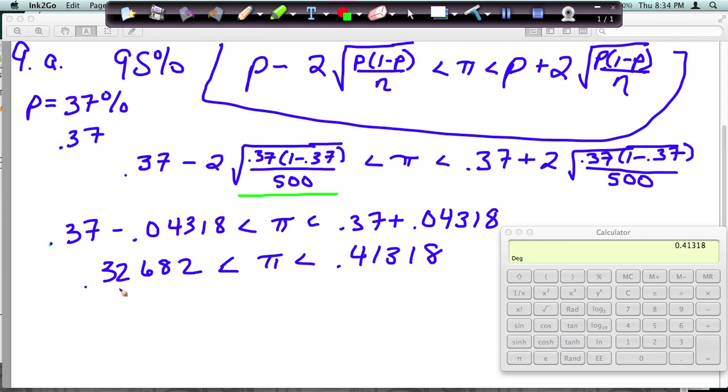So now I want to convert these to percentages because these are decimals. So this would be, I'm going to round to two decimal places. So move the decimal two places over to make it a percent, two places to the right, and I get 32.68. And then over here, move it two places over, I get 41.3, I have to round, since that's an 8, the 1 up to a 2. And that is our answer.